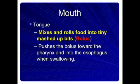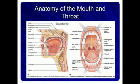In the mouth, the tongue mixes and rolls food into small mashed-up bits. It pushes the bolus towards the pharynx and into the esophagus when swallowing. This is shown in the anatomy of the mouth and throat diagram.